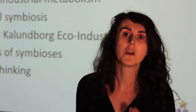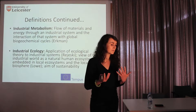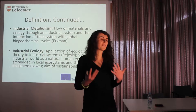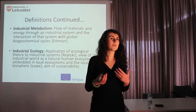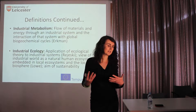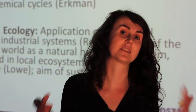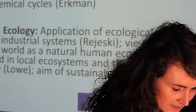We can use these concepts of metabolism and ecology to look at industrial systems directly. An industrial metabolism considers the flow of materials and energy through an industrial system, and the interaction of that system with global biogeochemical cycles — so we can map the system in terms of its metabolism. Following on from this, we have industrial ecology: thinking of the industrial system as an ecosystem, applying ecological theory to industrial systems. We can think of the industrial world as a human ecosystem embedded in local biological ecosystems and the biosphere. We can use the tools of ecology to map and understand the system, and also aim for sustainability by manipulating the system using these tools.